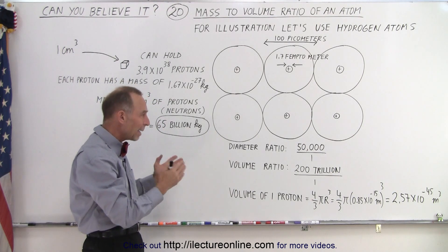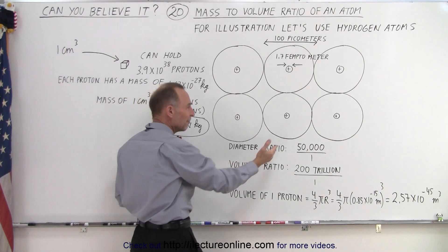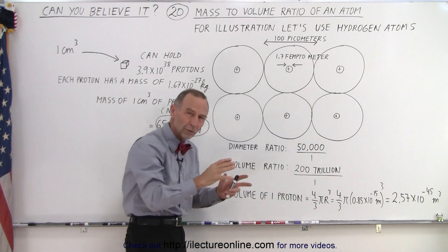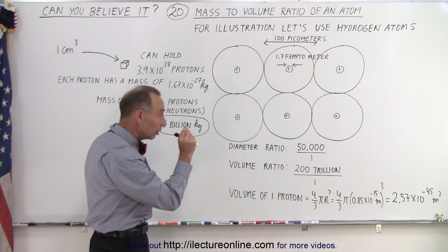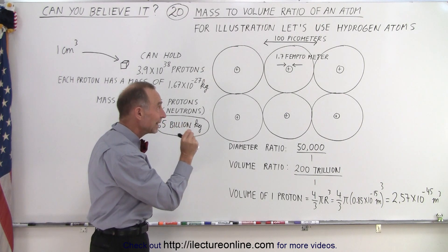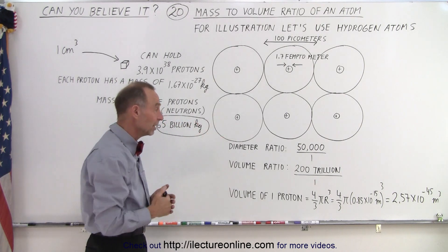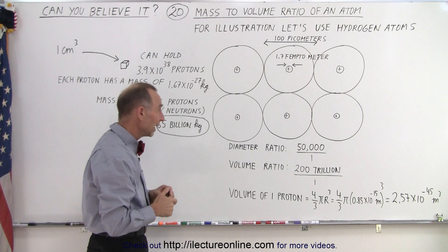So the diameter ratio is roughly 50,000 to 1, maybe a little closer to 60,000 to 1. It's an enormous ratio—that nucleus is extremely tiny in diameter compared to the size of the actual atom.